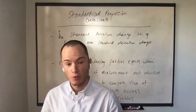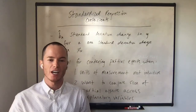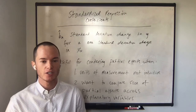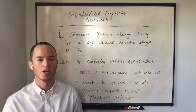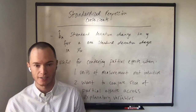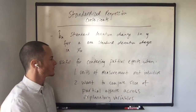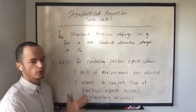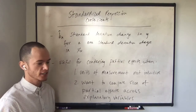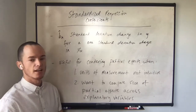A standardized regression coefficient is a b-hat. The b-hat represents a standard deviation change in y for a one standard deviation change in x. The standardized regression coefficient is useful for two different reasons when considering the partial effect of a change in x on y.